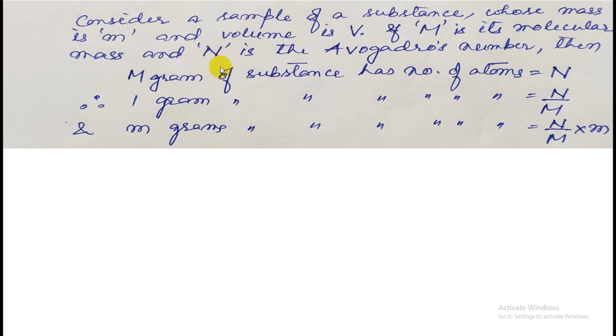N represents Avogadro's number, the number of atoms present in one mole of the substance. Since M is the atomic mass, M grams of the substance have N number of atoms, which is Avogadro's number. Therefore, one gram of the substance will have N by M atoms. It is simple unitary method: for M grams it is N, so for one gram it will be N by M.